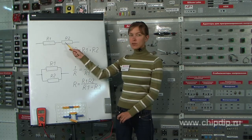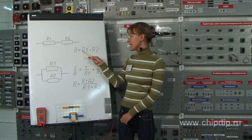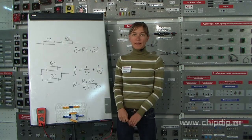Resistance of resistors connected in series is equal to the sum of resistances of individual resistors, R equals R1 plus R2.